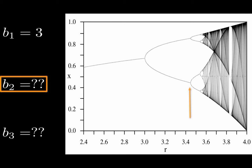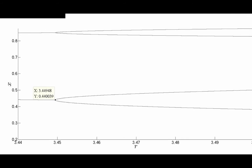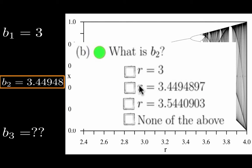To obtain b2, we need to use the bifurcation tool you generated in homework 2.2 to zoom into this region. If we do that, we see that the bifurcation from two-cycle dynamics to four-cycle dynamics occurs at 3.44948. This is the answer to 1b.